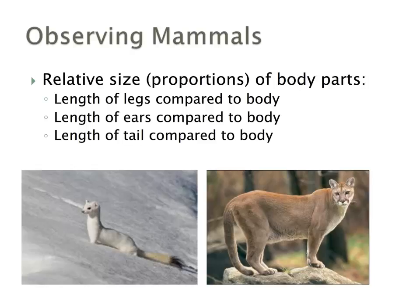When looking at relative size of body parts, we're looking for three things: the length of the legs compared to the body — in the weasel family we see very short legs and a very long body — the length of the ears compared to the body, and the length of the tail compared to the body. In the weasel family, tail length is critical when identifying between different species.